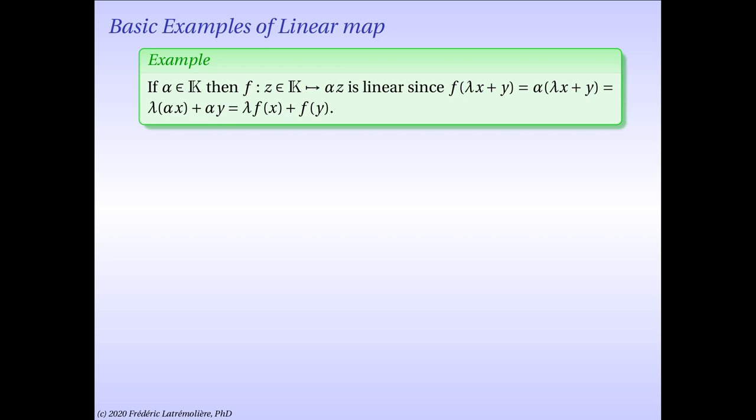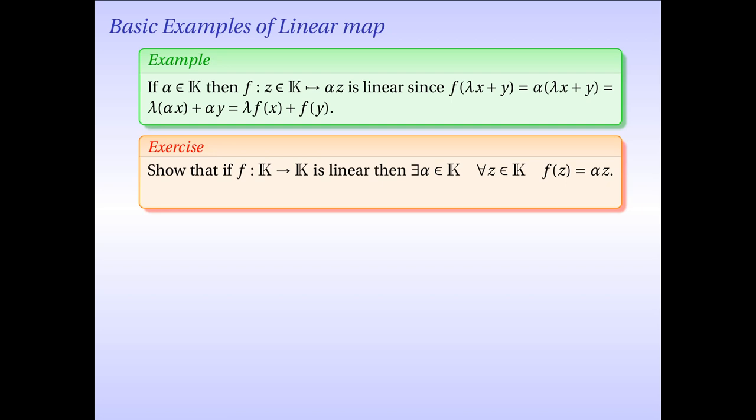Let's now look at other basic examples of linear maps using our characterization. The first basic example consists in looking at linear maps from a field to itself. Remember that a field is a vector space over itself. Fix alpha, some element of a field K, and define the function f that simply multiplies any z in K by alpha. Such a map is linear, since if we take any scalar lambda and two elements x and y in K and calculate f of lambda x plus y, we get alpha times lambda x plus y, which equals lambda times alpha x plus alpha y. We recognize this as lambda f of x plus f of y. So by our characterization, f is linear.